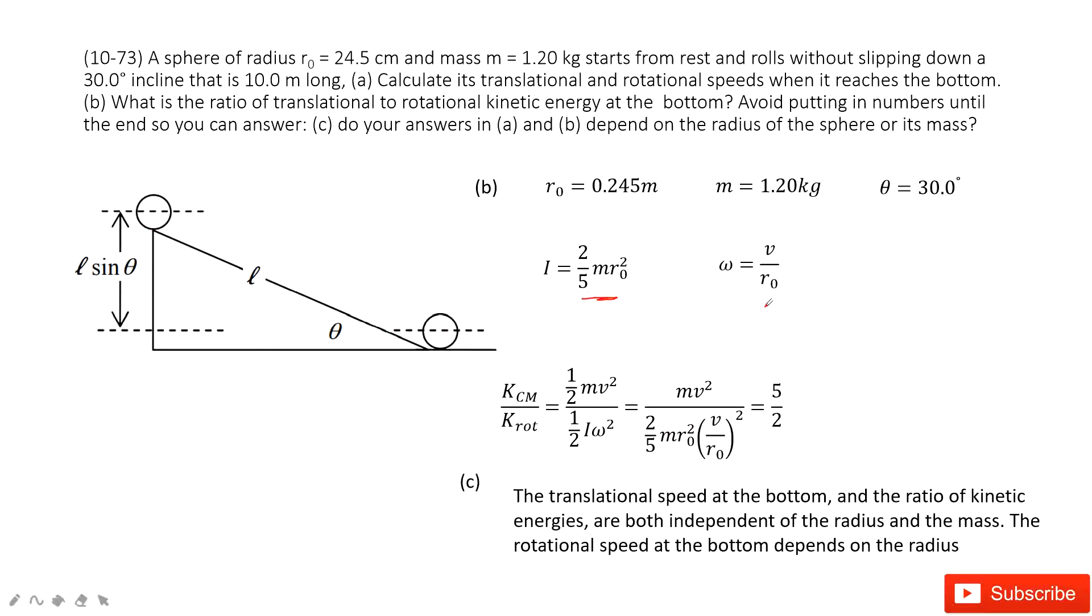I is this value and omega is this value. When you solve this, the ratio is a constant, 5/2.